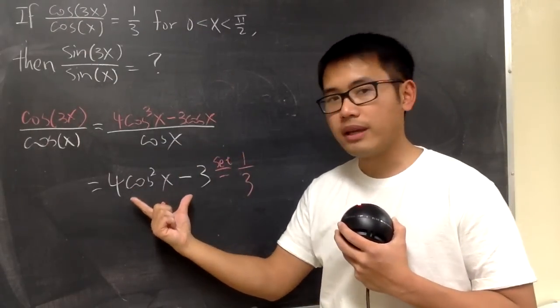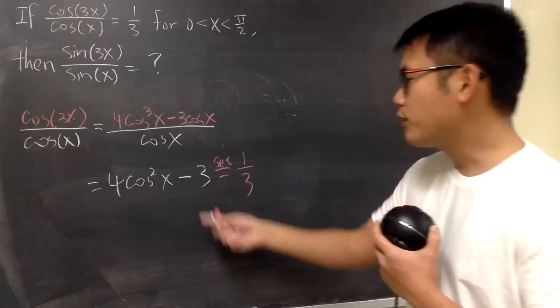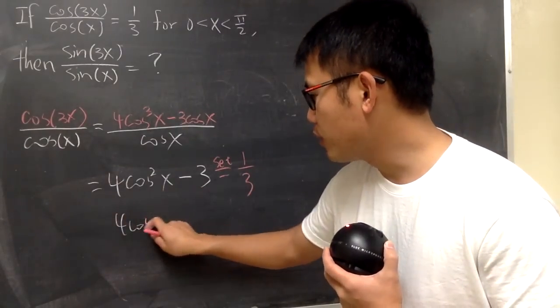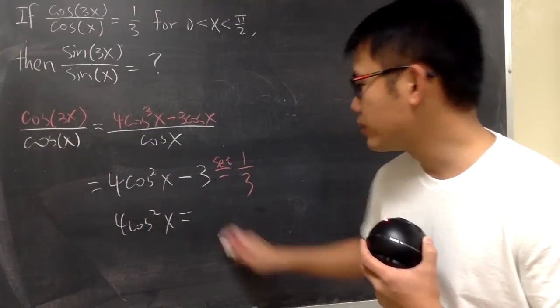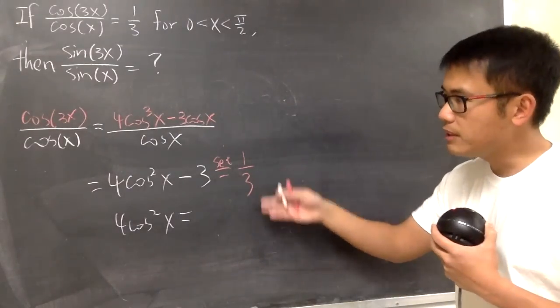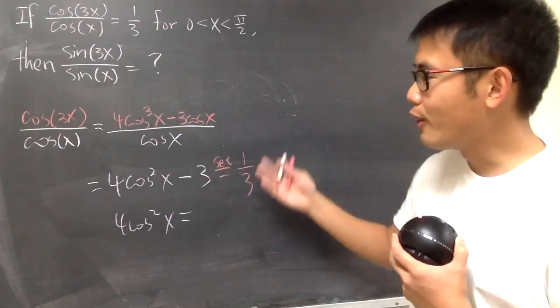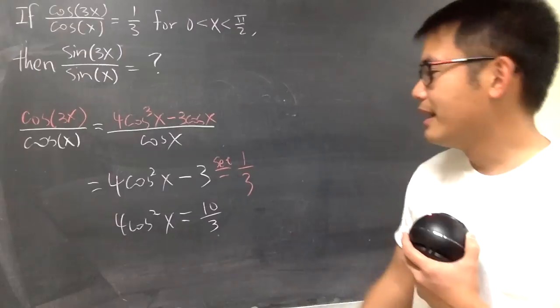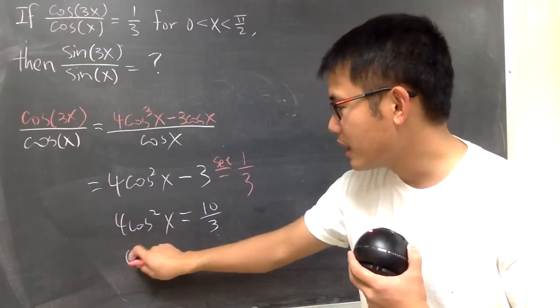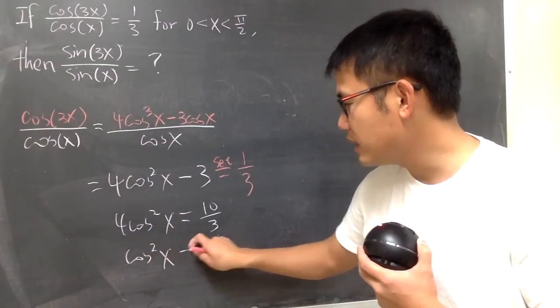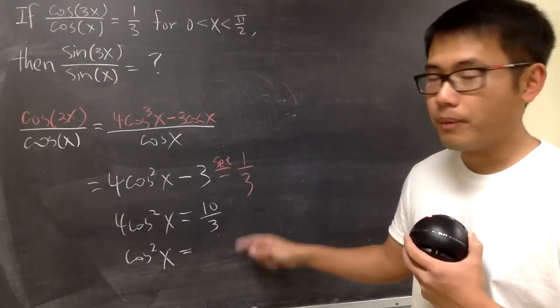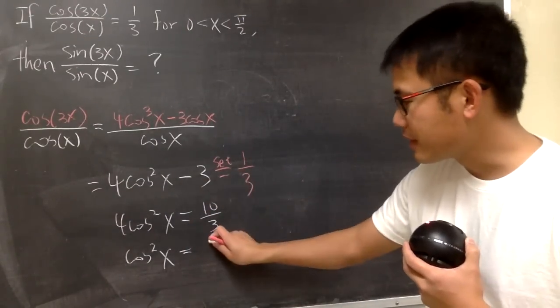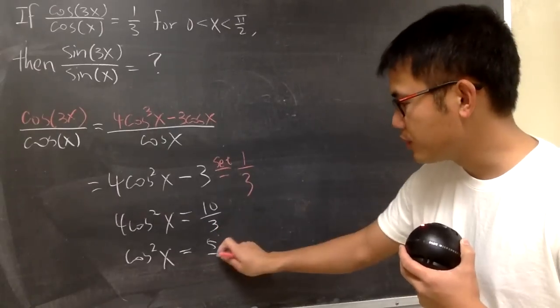Let's add 3 on both sides. From here, we say 4cos²x equals 1/3 plus 3, which is the same as plus 9/3, which is just 10/3. Then divide both sides by 4, we get cos²x equal to 5/6.